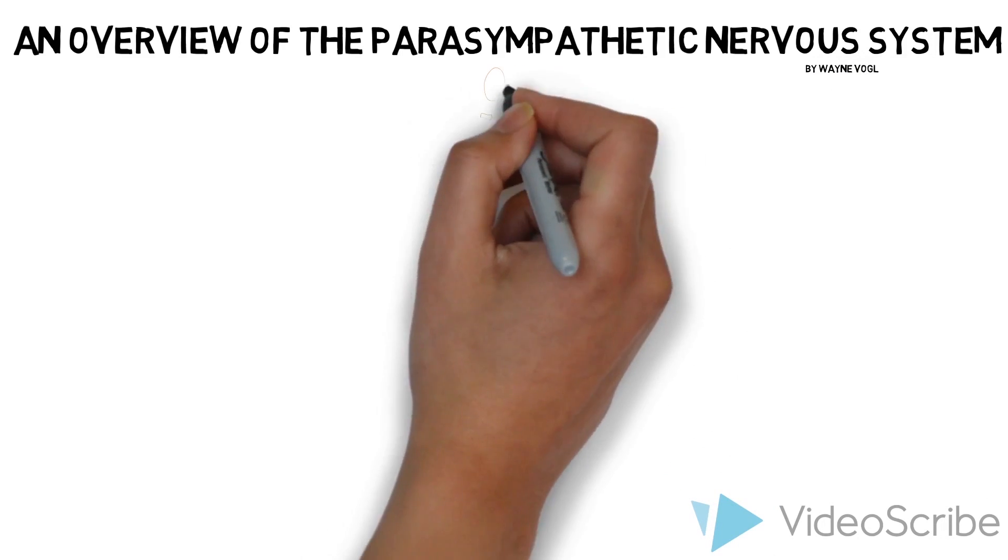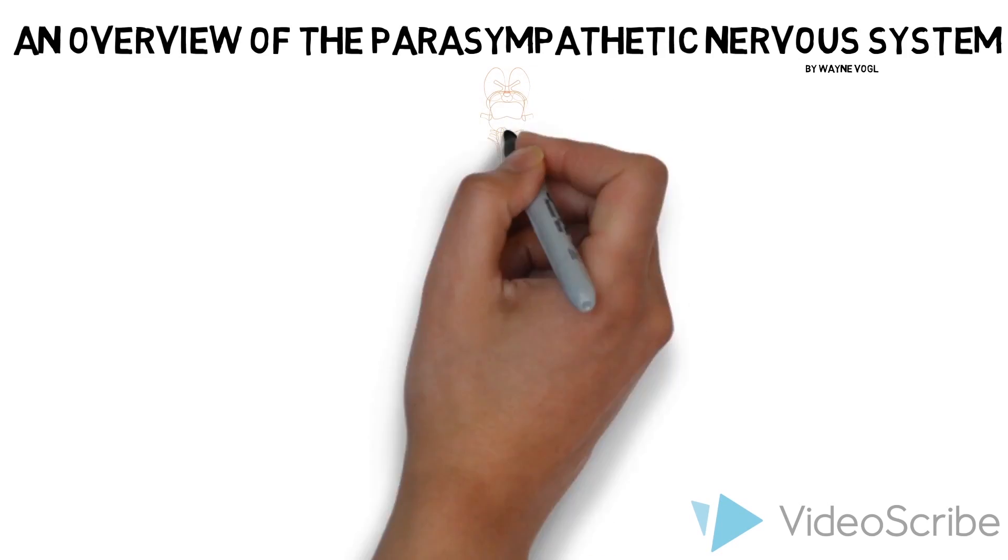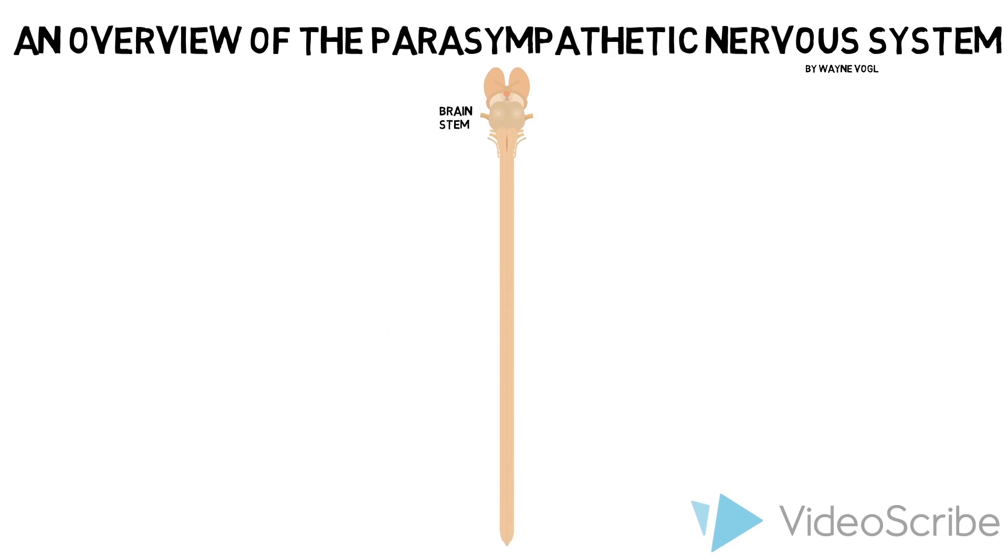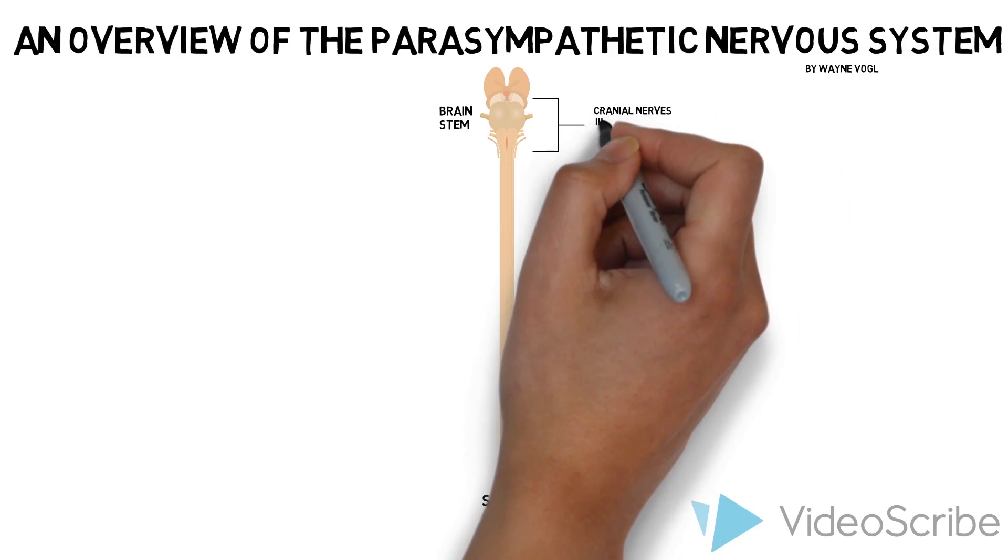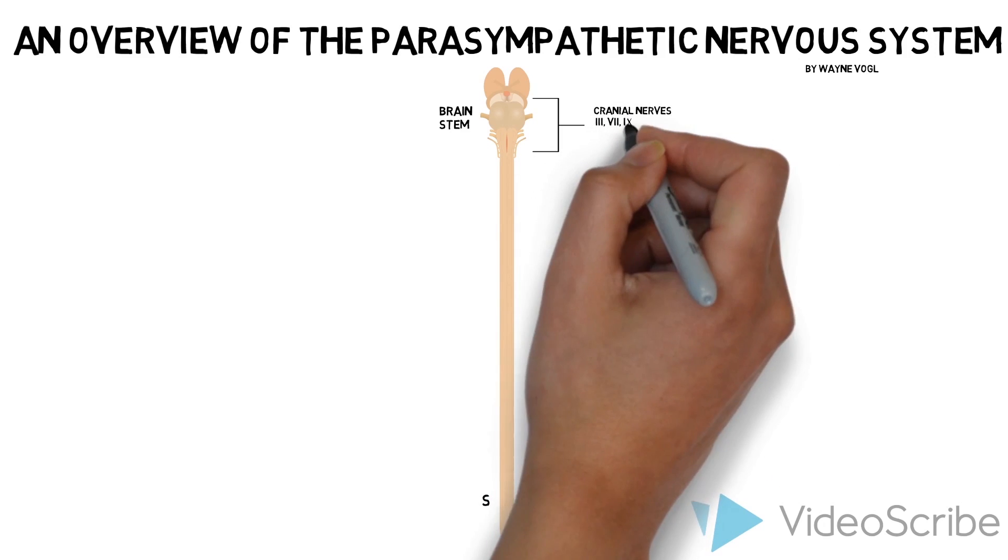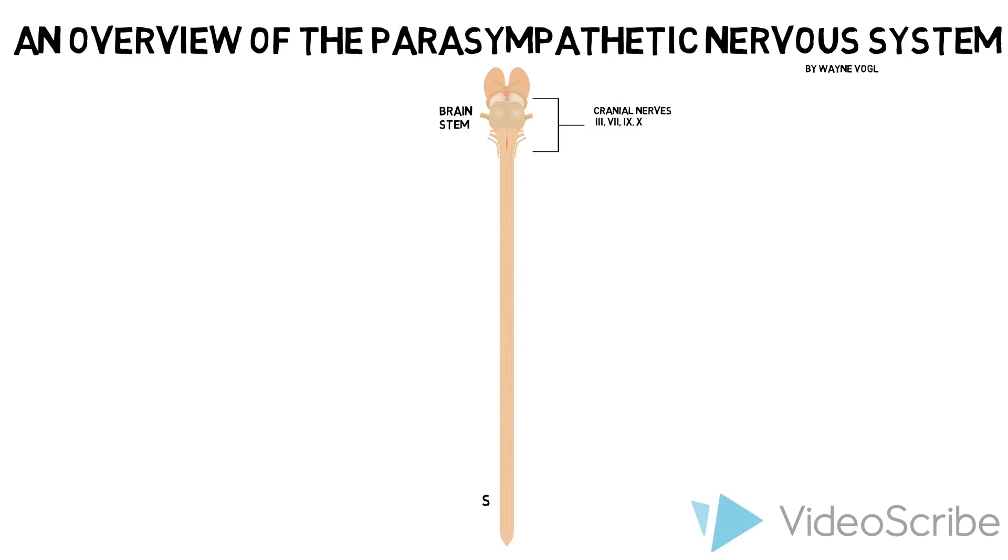Preganglionic parasympathetic neurons are located in cranial and sacral regions of the central nervous system. Visceral motor nerve fibers leave the central nervous system in cranial nerves 3, 7, 9, and 10, and in sacral spinal nerves S2, 3, and 4.